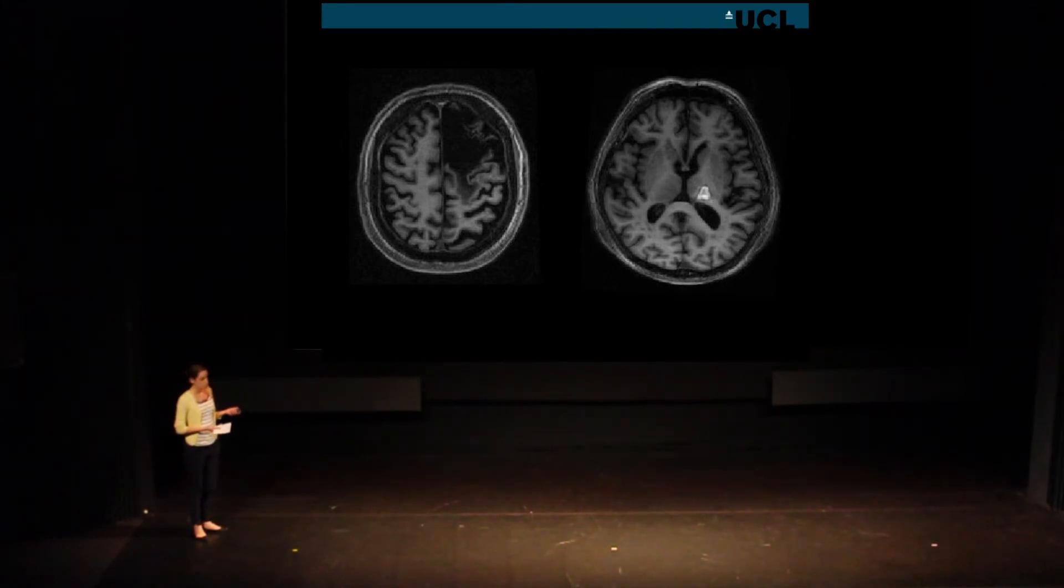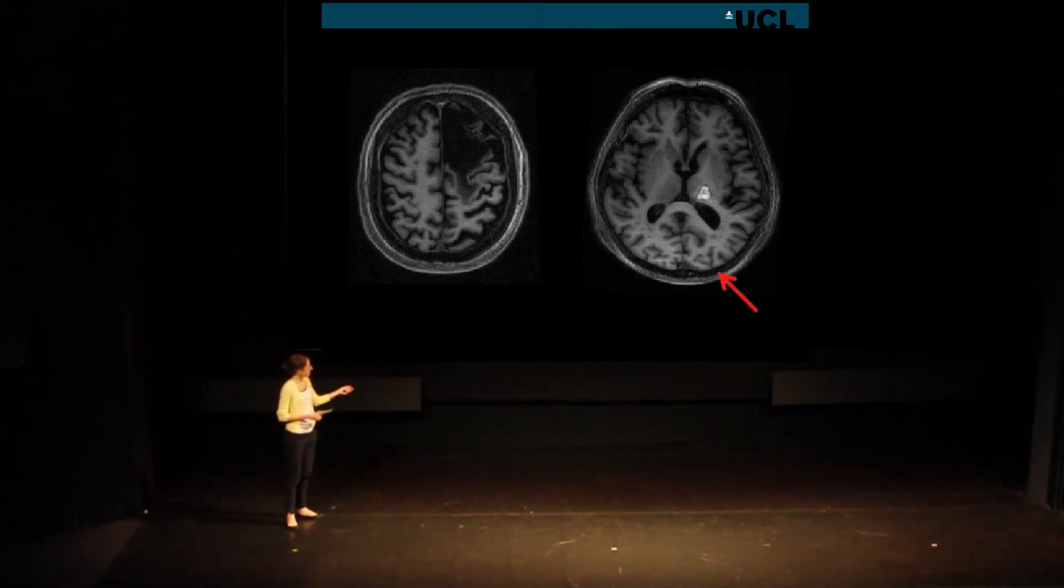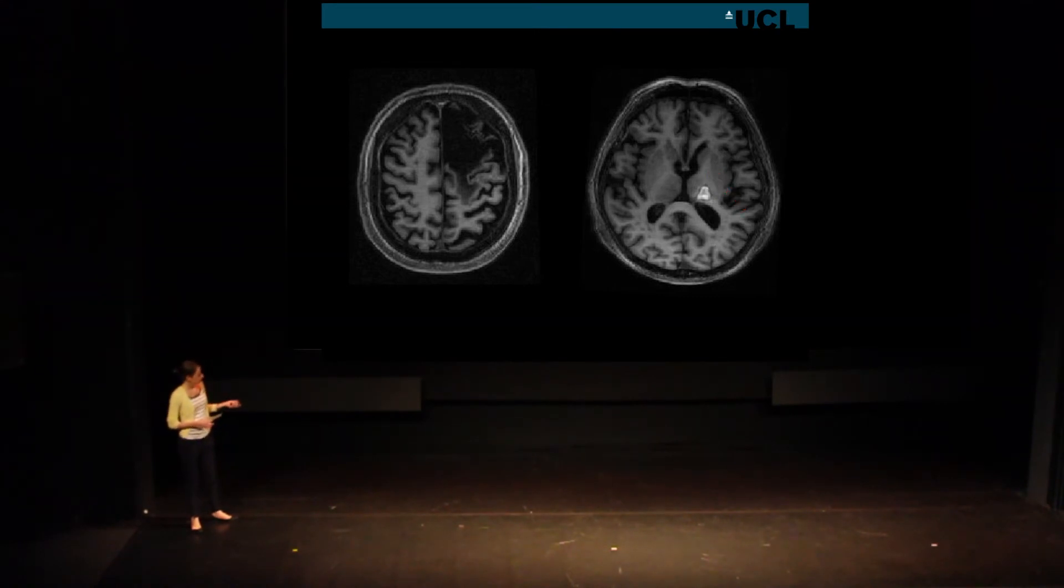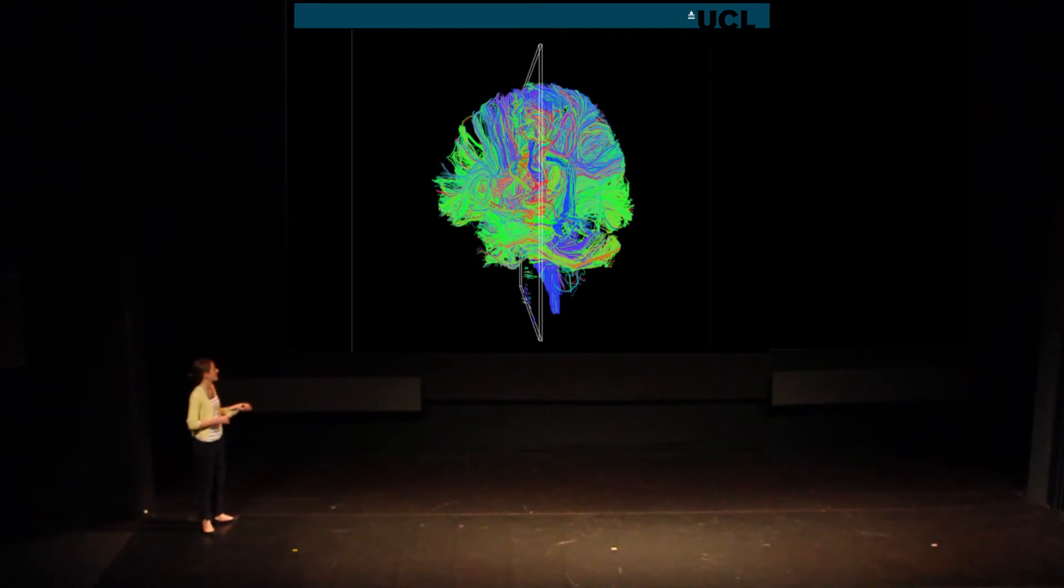You might also have heard of grey matter and white matter. You can actually see this on these MRIs. Grey matter is around the outside here, and it's slightly darker. This is the nerve cell body, where the hard work goes on. This is where the movement information is created. Then, these pale white fibers in between are all the pathways connecting them up, sending messages between lots of different areas, and sending information down the spinal cord. We can look at these white matter pathways using a technique called DTI.